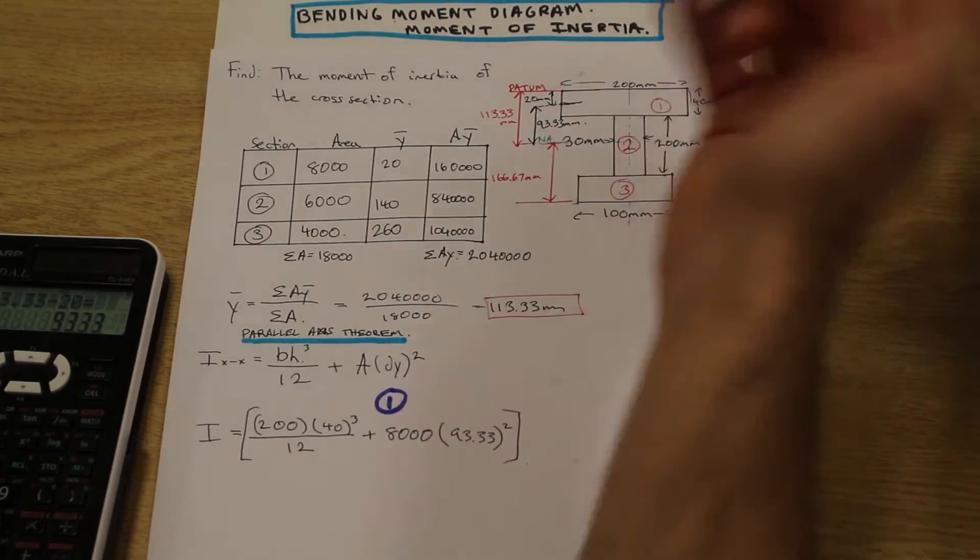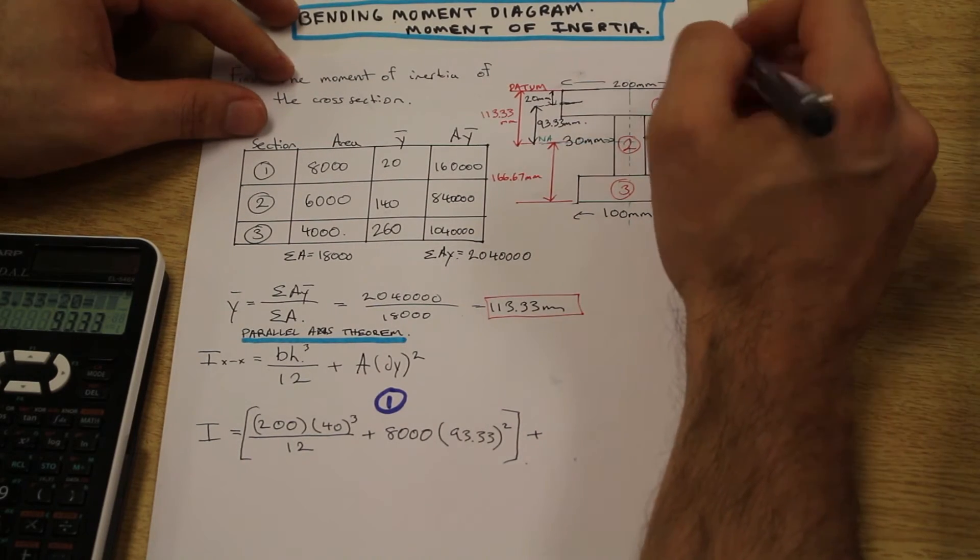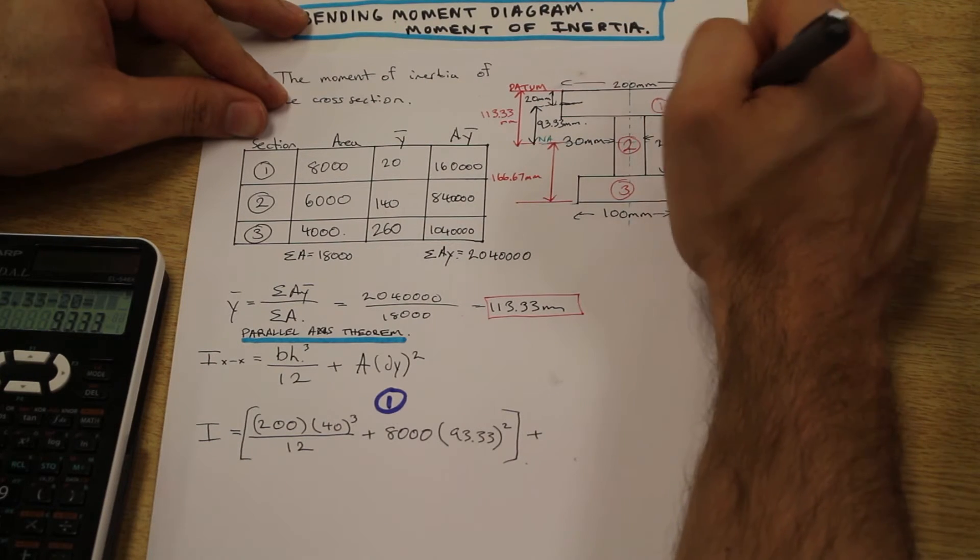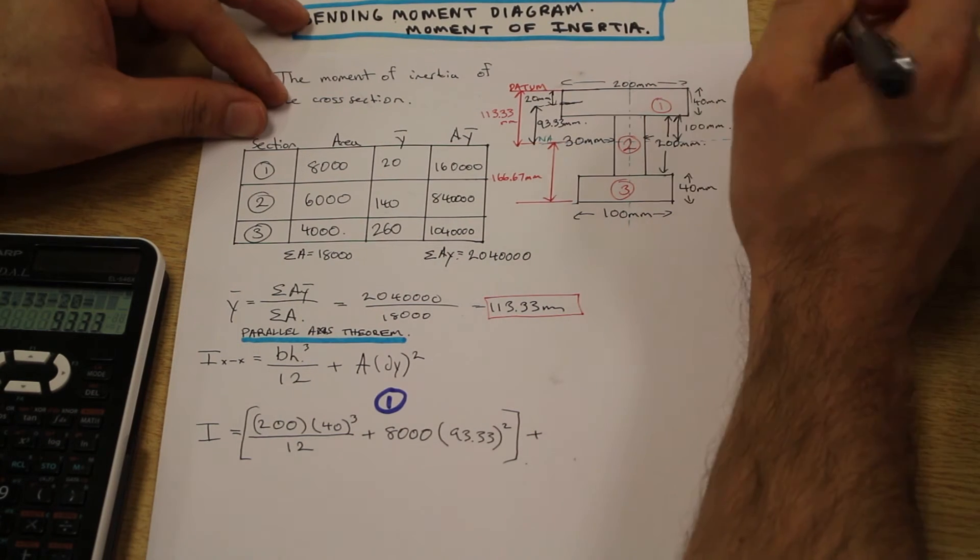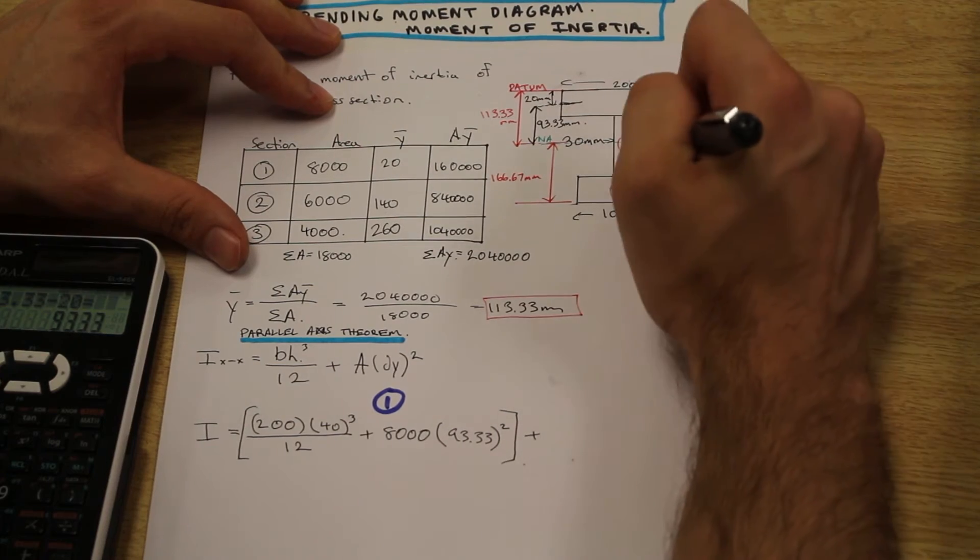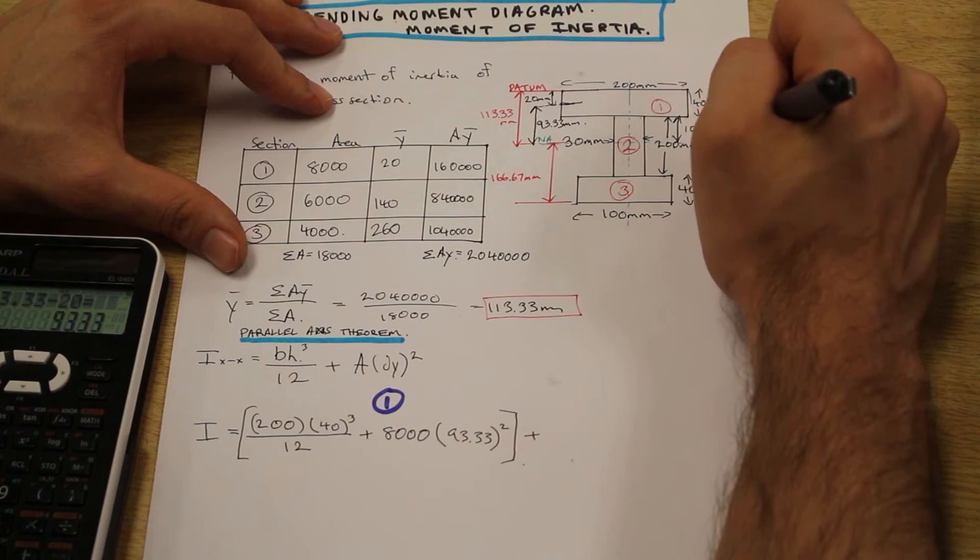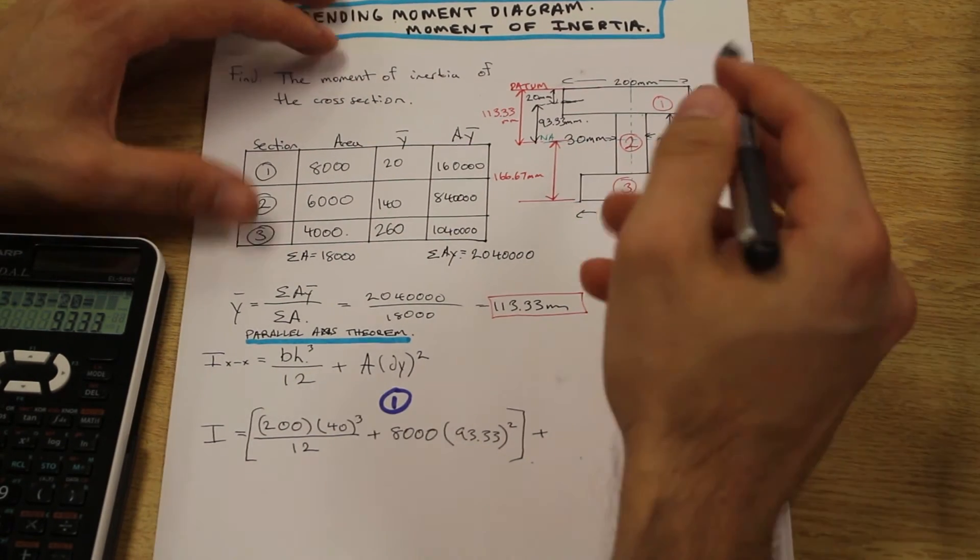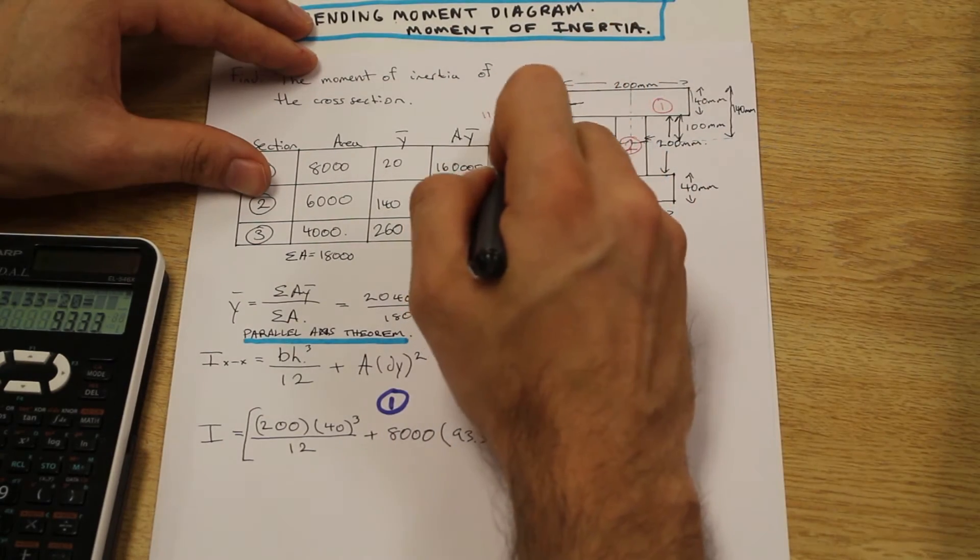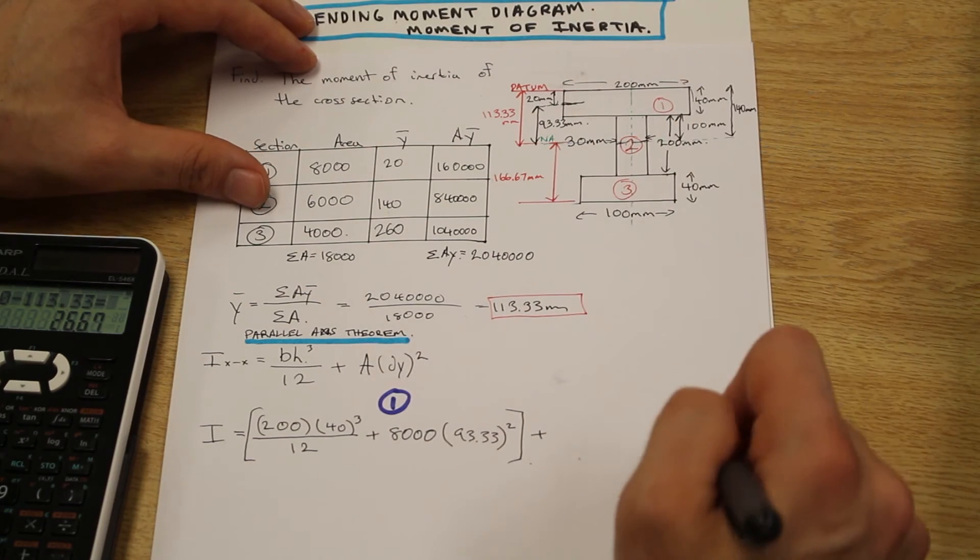Next, section two. This one is a little trickier. The centroid of section two is 100 millimeters from the bottom of this flange here to the center of the web. So the distance from the center of this shape to the top of the beam is 100 plus 40, so we have 140 millimeters. Now the distance from the center of this shape here to the neutral axis, which is 113.33, is simply 140 minus 113.33 and that's going to be our dy. I just showed that to you because that's the trickiest part. The rest of this equation is just plugging in numbers.